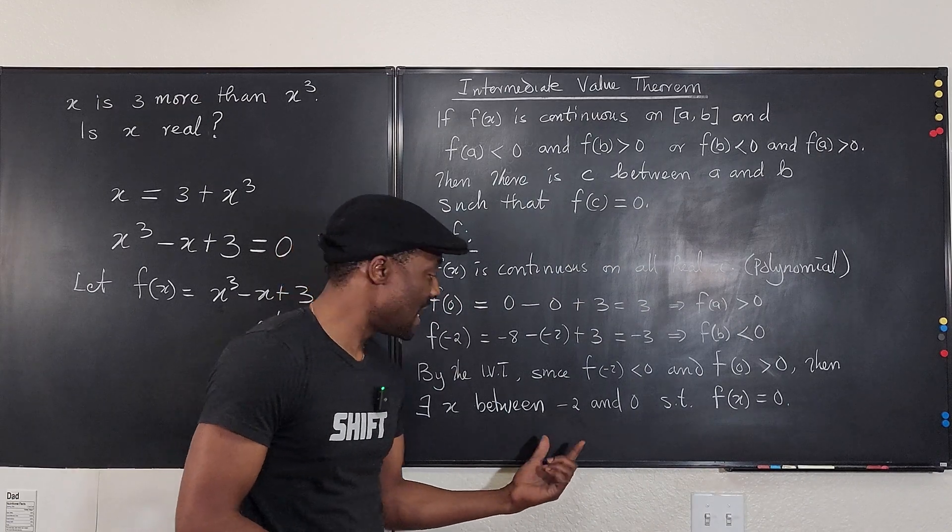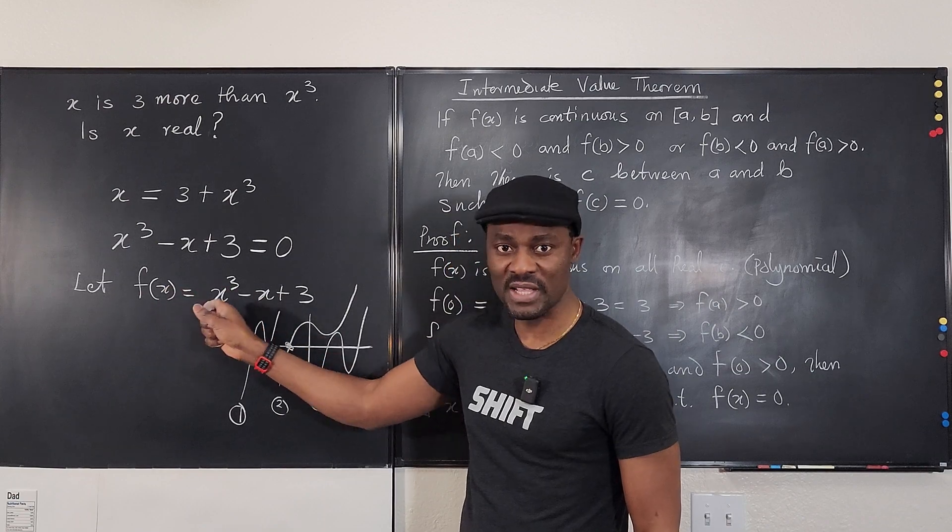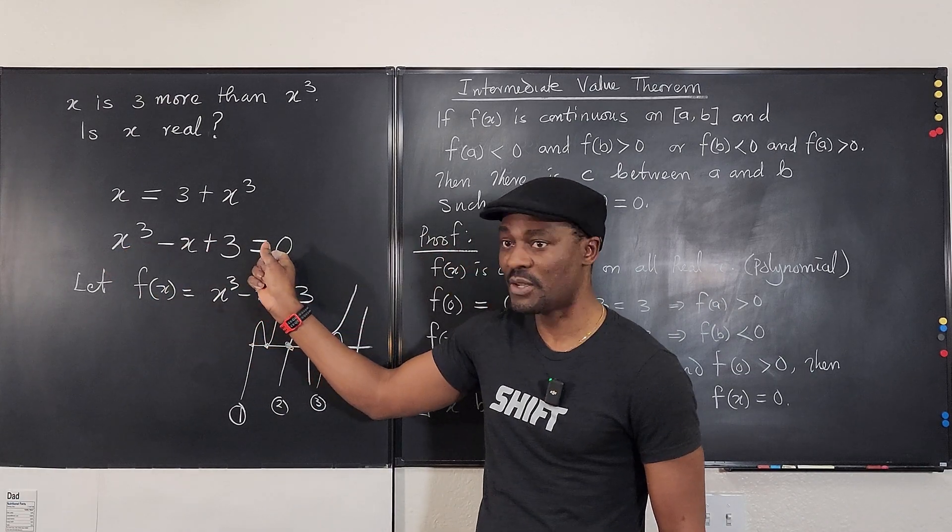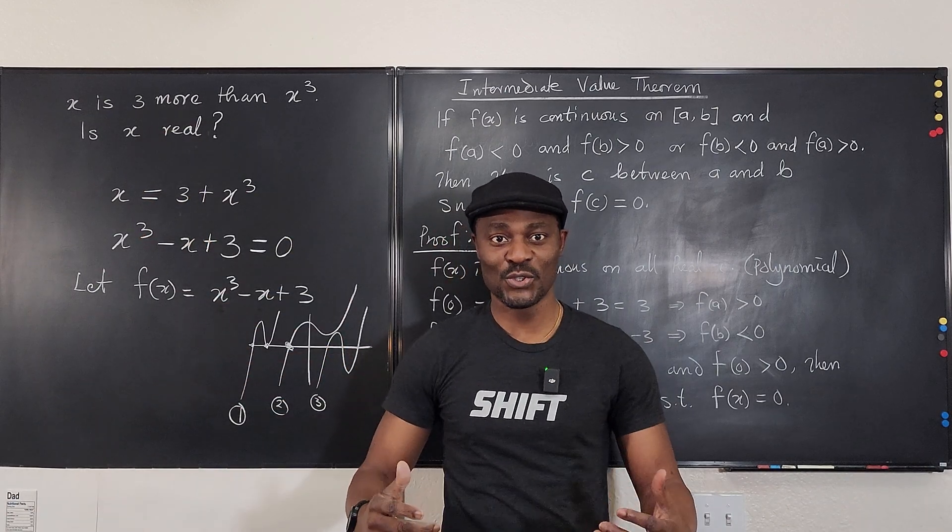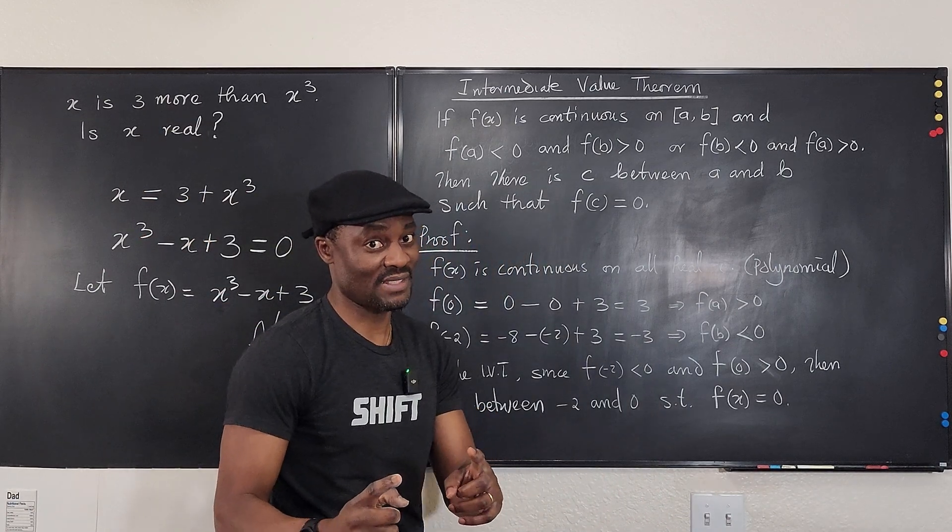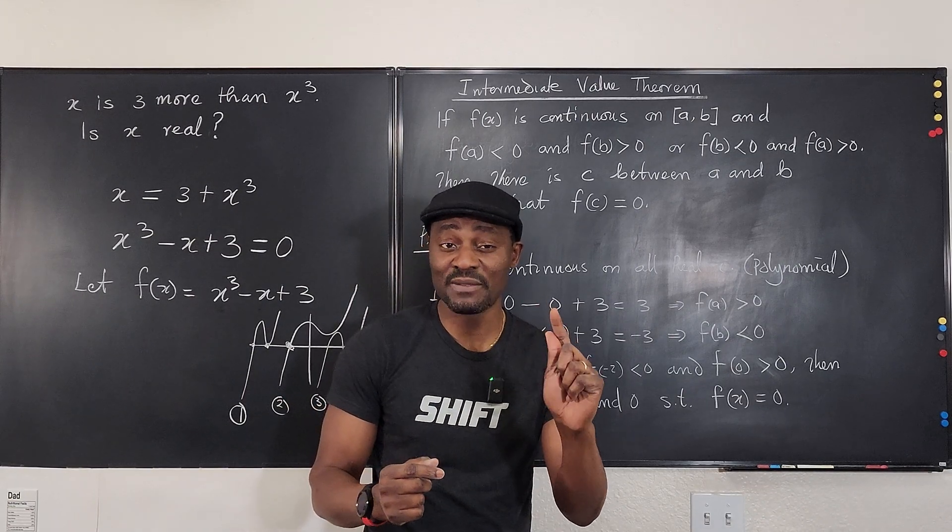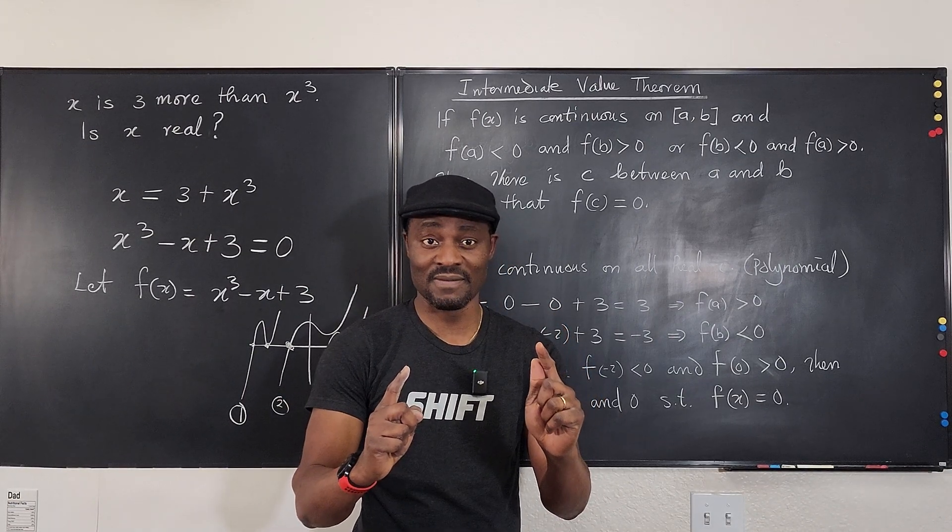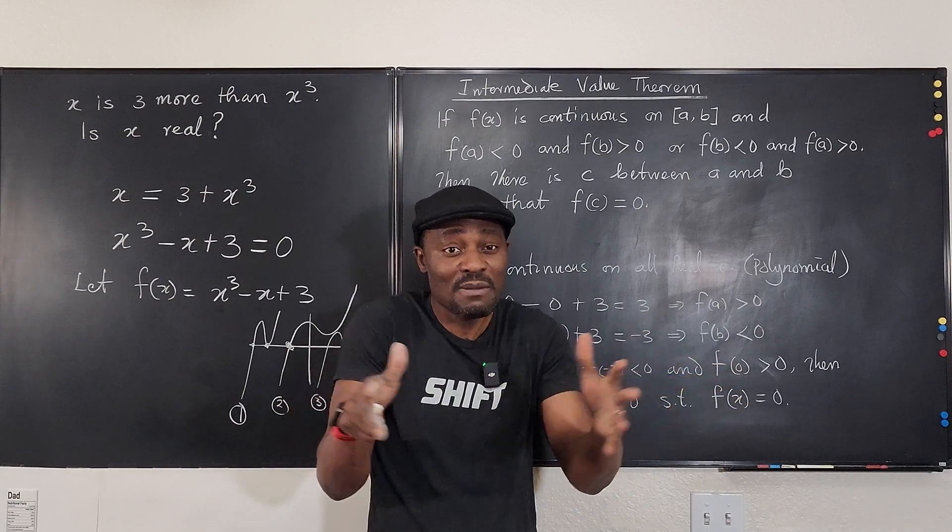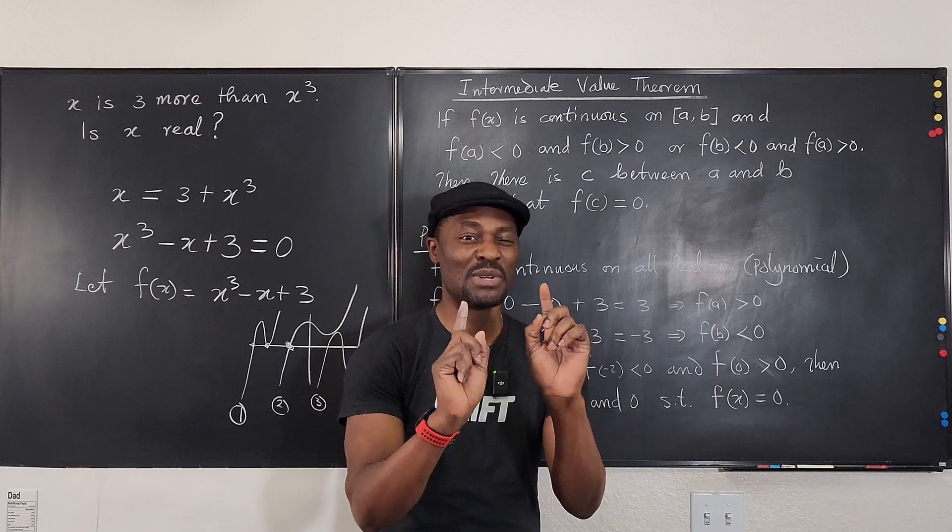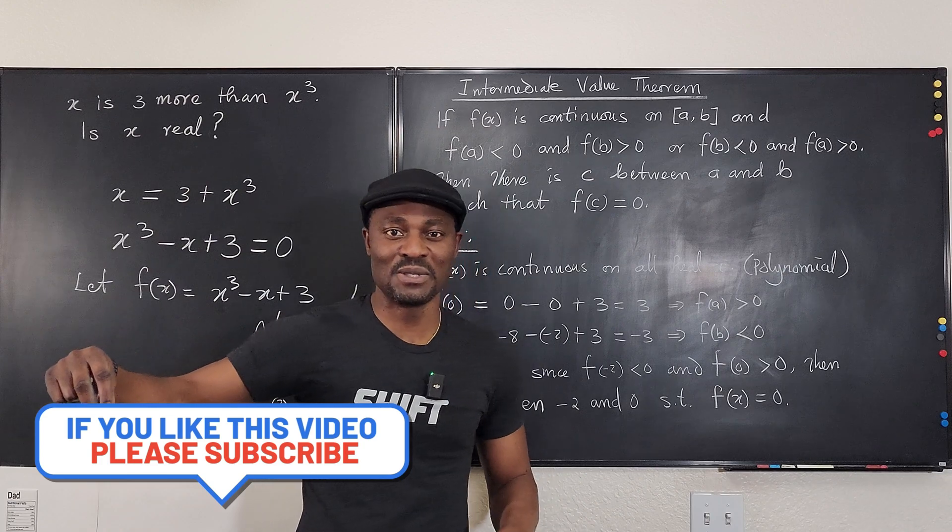So we have proved that between negative two and zero there is a real solution to this. That is a condition that makes this equal to zero, which makes this true and which makes our question true. So x is real. There's a real x. Actually, if you solve this, you notice that your number is between negative two and negative one. As you can see, it's between negative two and negative one. So you can keep closing the gap until you see precisely where this number will be hiding. At least if you don't know where it lives, you know the zip code.